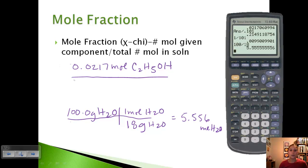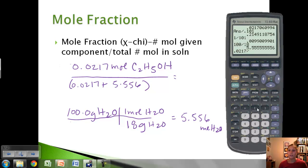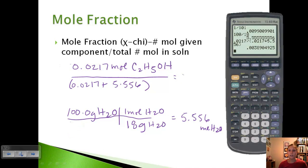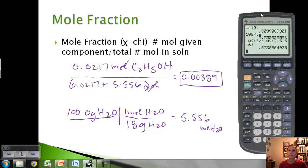Our total is the moles of ethanol plus the moles of water. So we take 0.0217 moles of ethanol divided by the total (0.0217 + 5.556), which gives us 0.00389. Moles cancel, so mole fraction does not have any units. The mole fraction of ethanol is 0.00389.